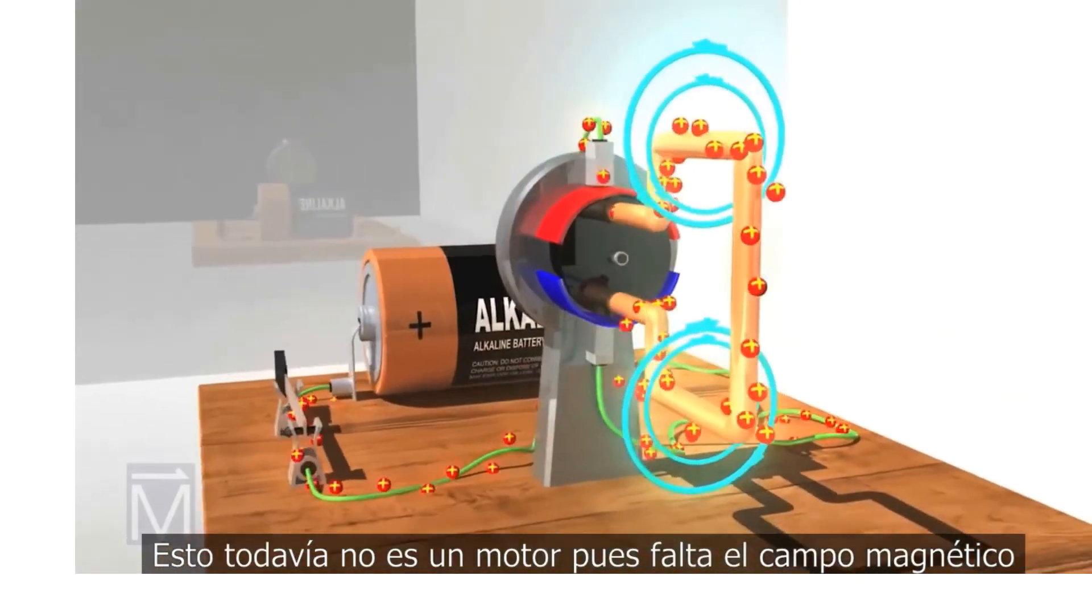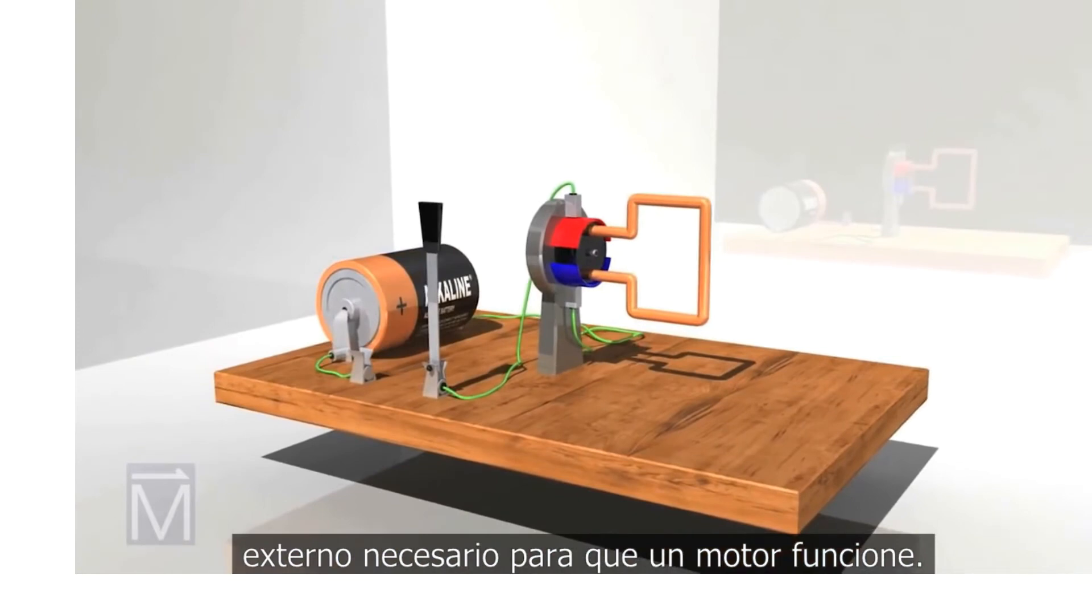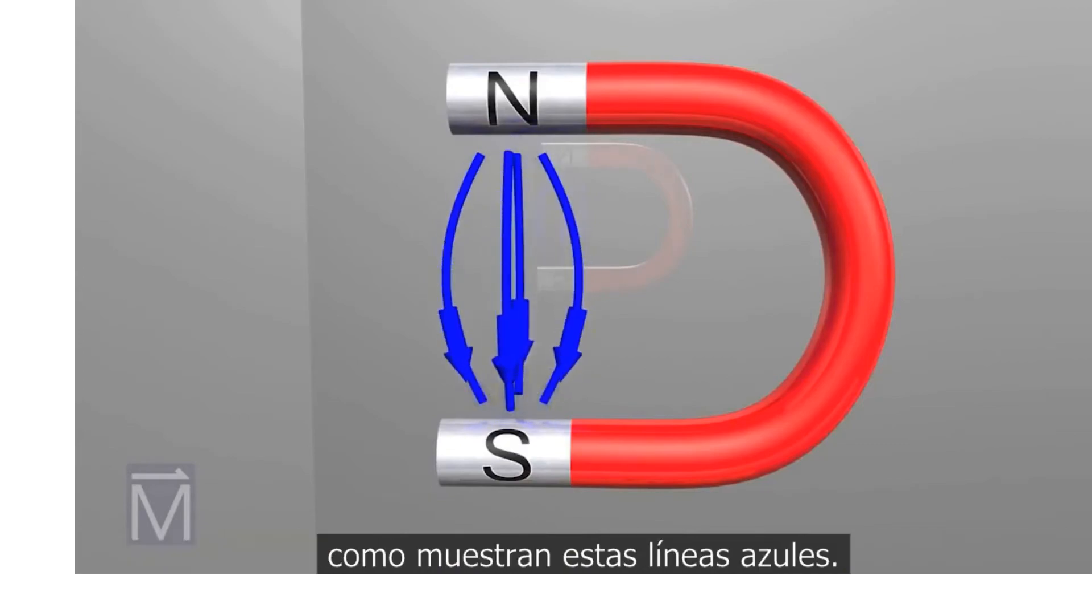This isn't much of a motor yet, though. An important piece, an external magnetic field, is missing. In our demonstration, this horseshoe magnet will provide that field, as shown by these blue lines.